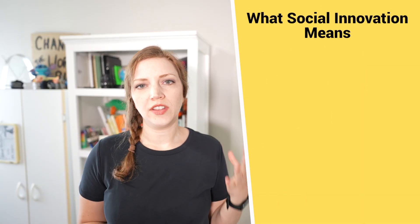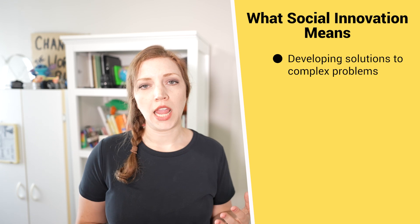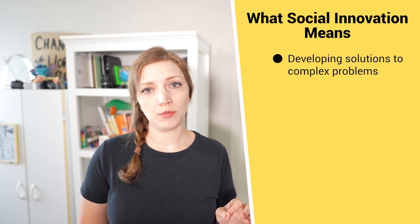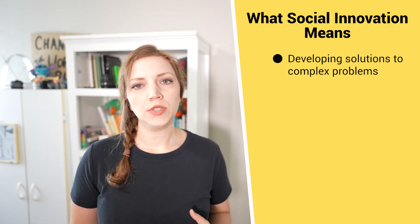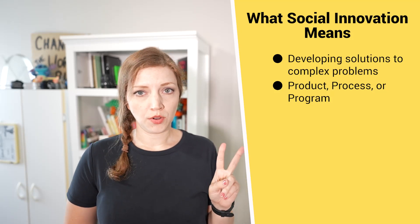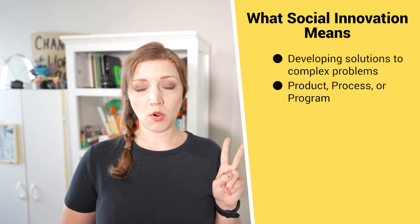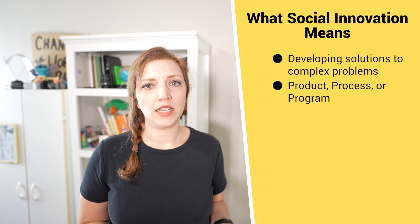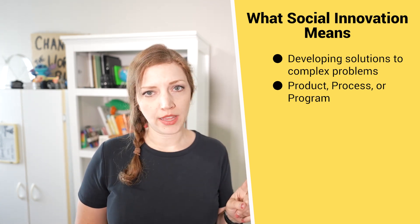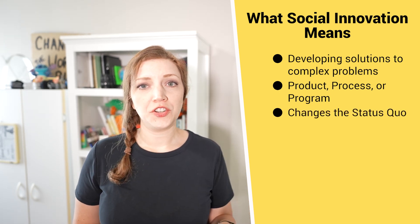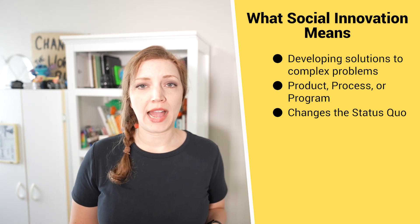What does social innovation actually mean? Social innovation is the process of thinking about and developing elegant, efficient, effective solutions to complex social problems — things like hunger and poverty. Social innovation usually results in one of three things: a new and improved product, a new and improved process for an existing system, or a new and improved program. They all have one thing in common: the outcome is the same. They all dramatically improve lives or change the system or status quo for the people impacted by the problem at hand.